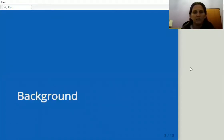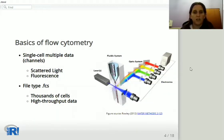Some background. The flow cytometer acquires single cell multiple data called channels, like scattered light and fluorescence, and stores it in FCS files.